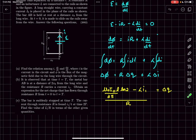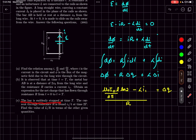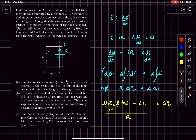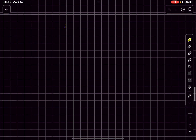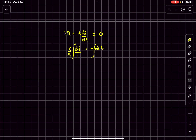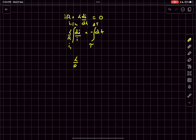In part (c), the bar is suddenly stopped at time T, and the current through resistance R is found to be i₁/4 at time 2T. We need to find L/R. Stopping the bar means the flux through the loop is now constant — it's not changing with time — so dΦ/dt = 0 and the EMF goes to zero. Our working equation becomes: iR + L·di/dt = 0. Separating variables and integrating, with current i₁ at t = T and i₁/4 at t = 2T, L/R comes out to be T / ln(4).